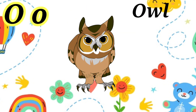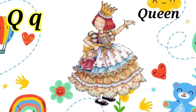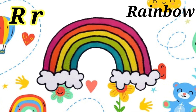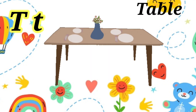P for Pain, Q for Queen, R for Rainbow, S for Strawberry, T for Table.